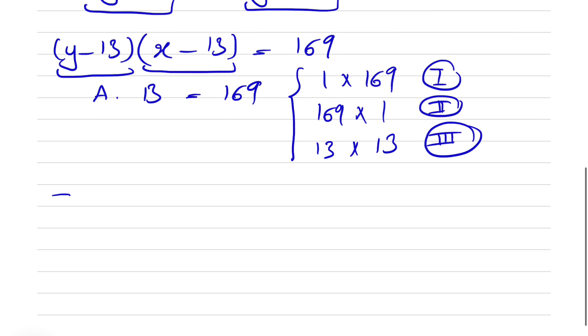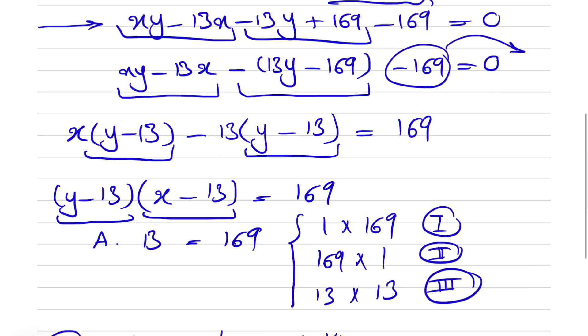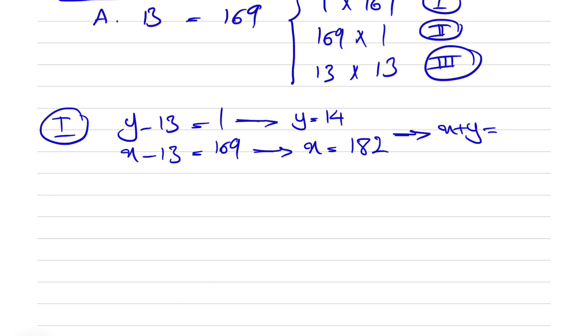Let's go with the first one, where our y minus 13 is equal to 1 and x minus 13 is equal to 169. So from here, we can find our y, which will be 14. And in the second one, our x is basically 169 plus 13, which will be 182. And if you want to find x plus y, which is what the question is asking, so we are interested in x plus y. So x plus y is basically 14 plus 182, which will be 196. So that's one answer for here.